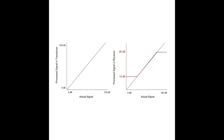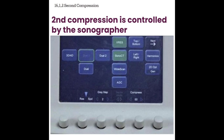Anything that happens between system components is first compression — it has to happen so each component can continue to process the signal being received. Second compression is controlled by the sonographer; we have knobs on our machine that allow us to do that. Your knob might be labeled 'compression' or 'dynamic range.' By adjusting this knob, you are adjusting the spread of choices — the grays the system is going to use to display the reflector strengths. Typically, more compression occurs on the weaker side, assigning more blacks to weak signals and more whites to strong signals, with a little more differentiation of the signal in between.